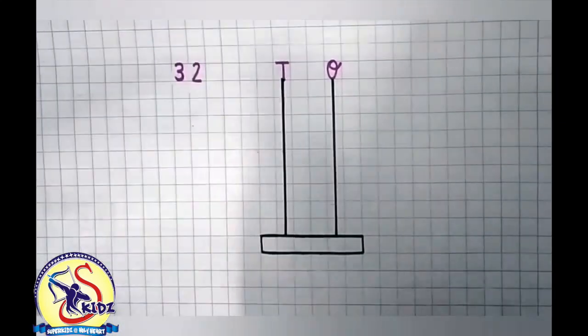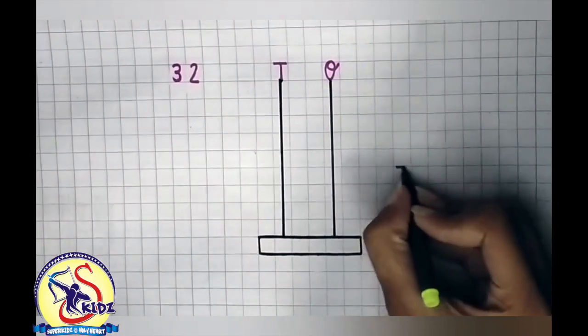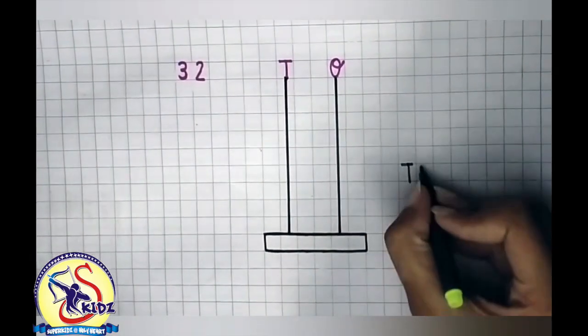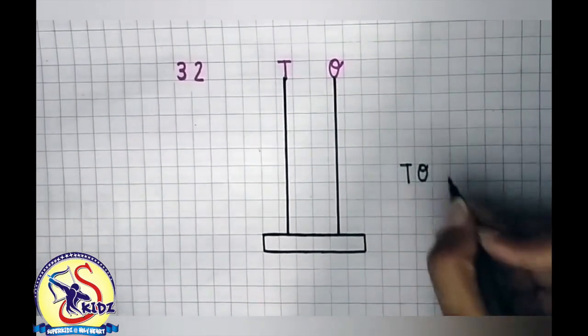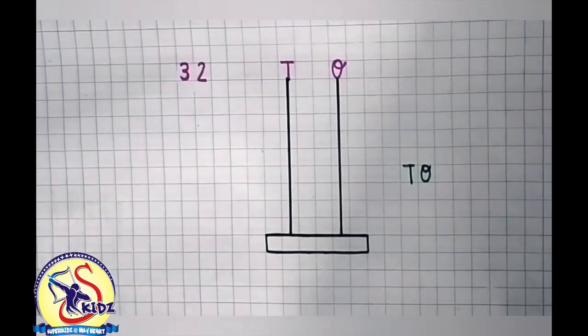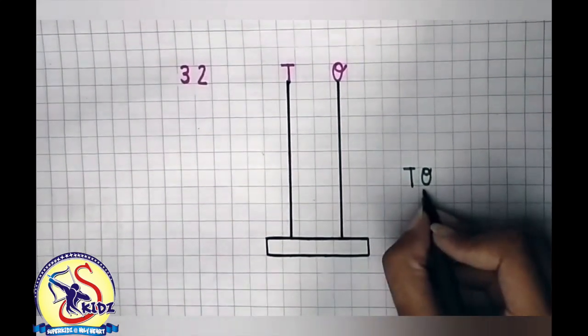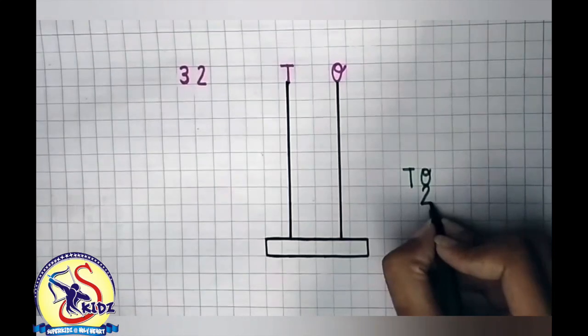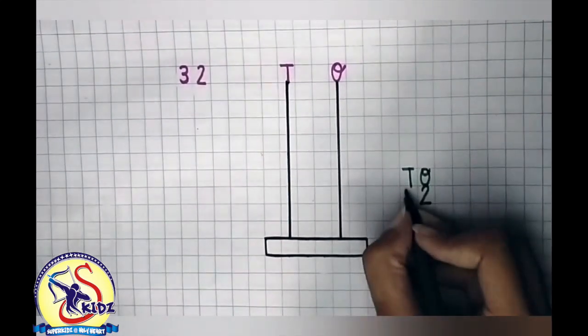So I am writing here 10s and 1s. Now we will write number 2 under the place of 1s and number 3 under the place of 10s.